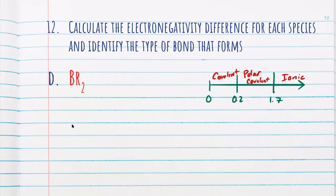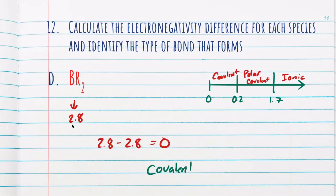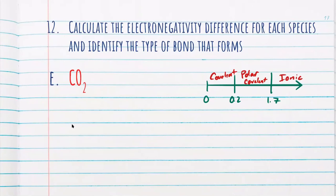Here we have a bromine molecule (Br₂). Bromine has an electronegativity of 2.8. So 2.8 minus 2.8 gives us zero, making this a pure covalent bond. For CO₂ again, I'm just going to put the same answer as before.